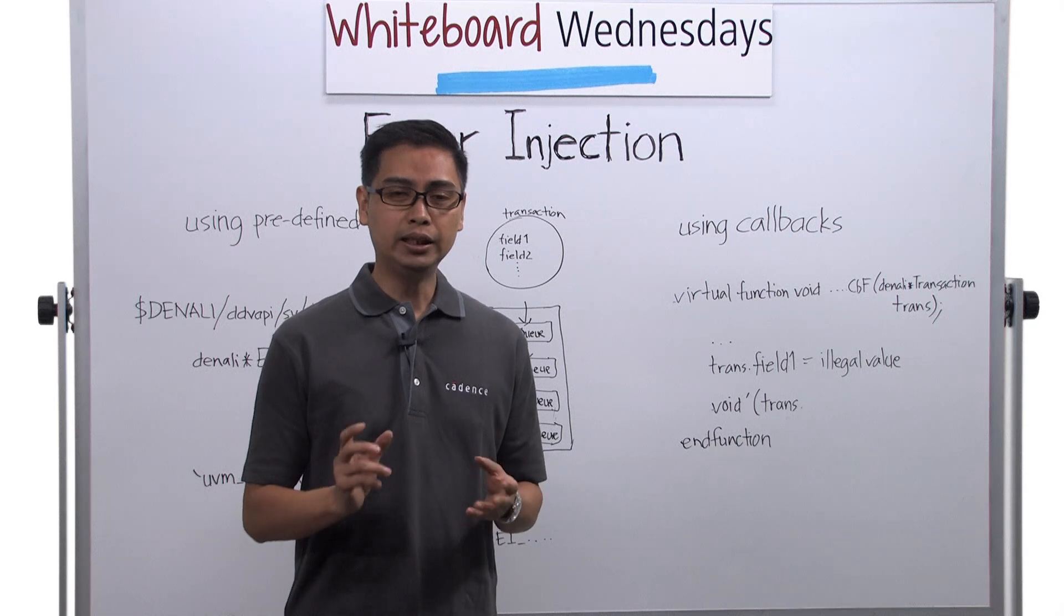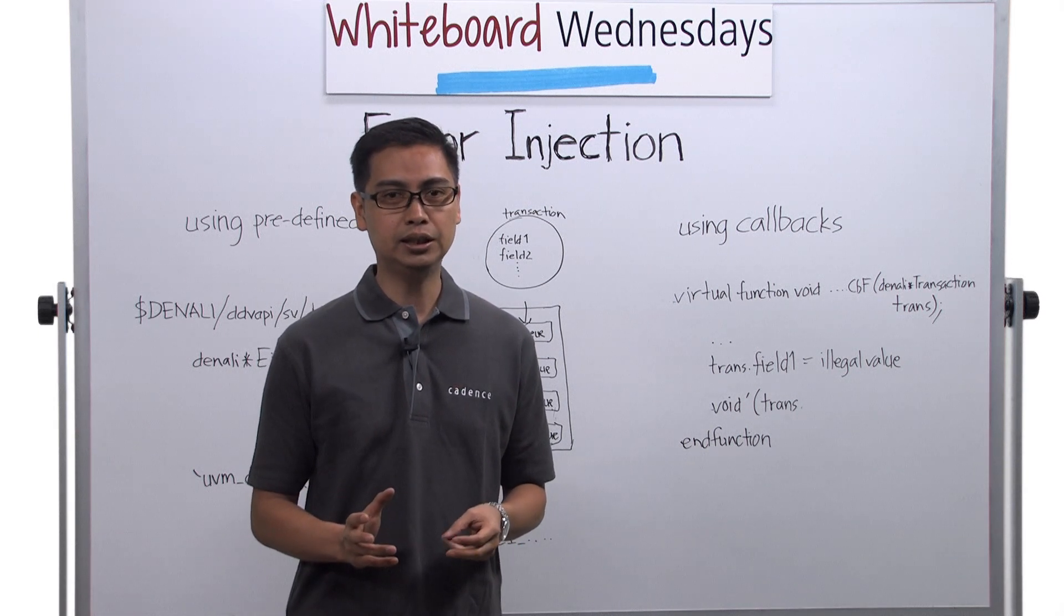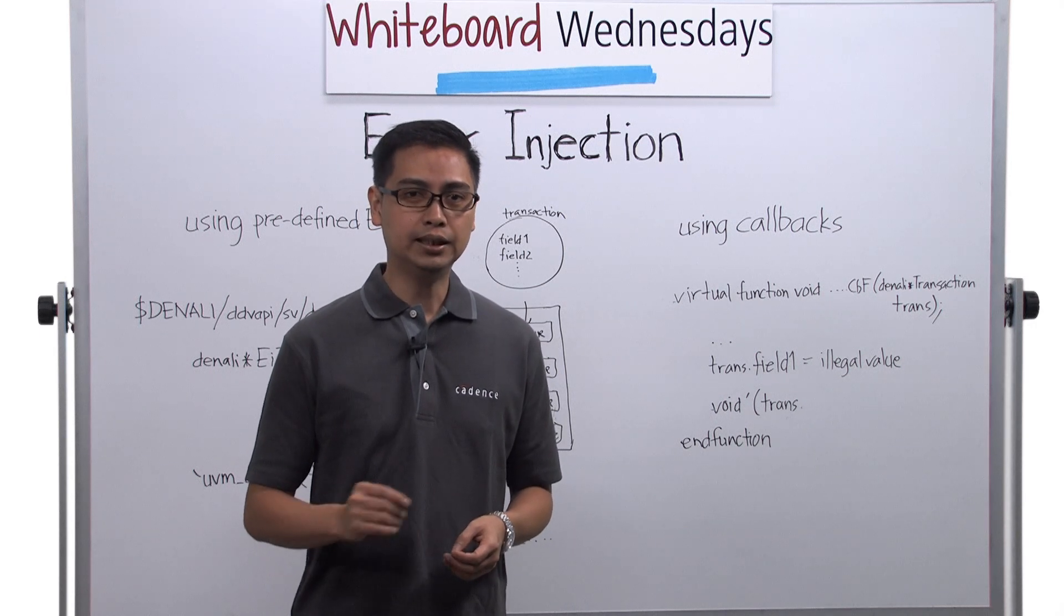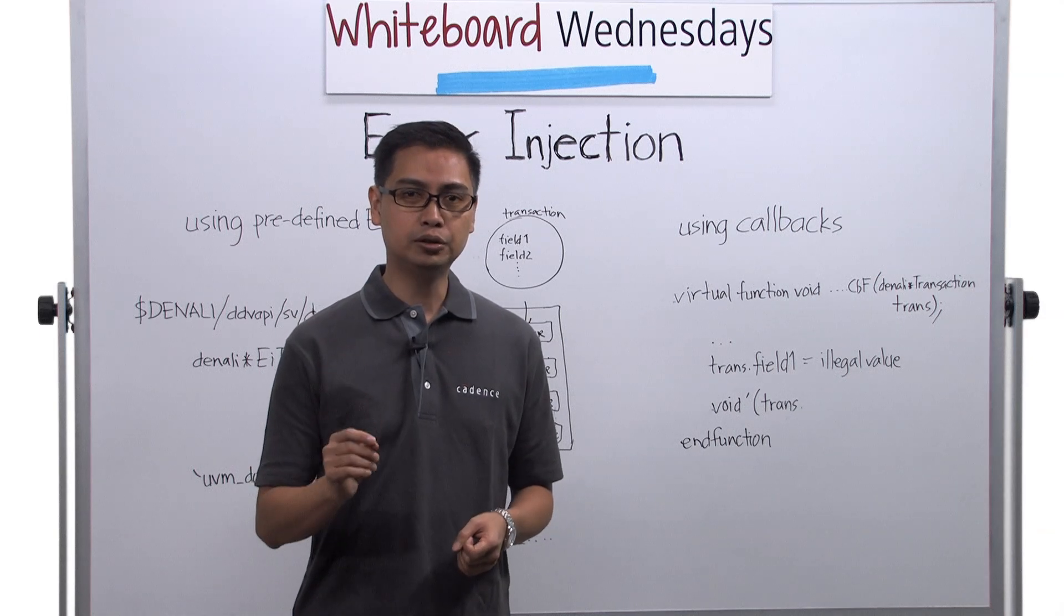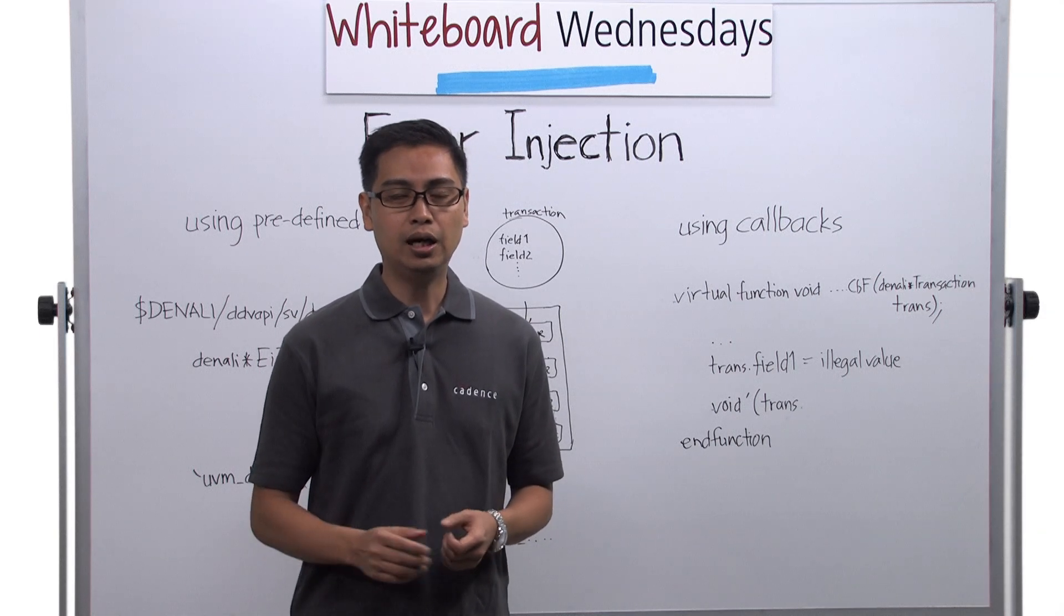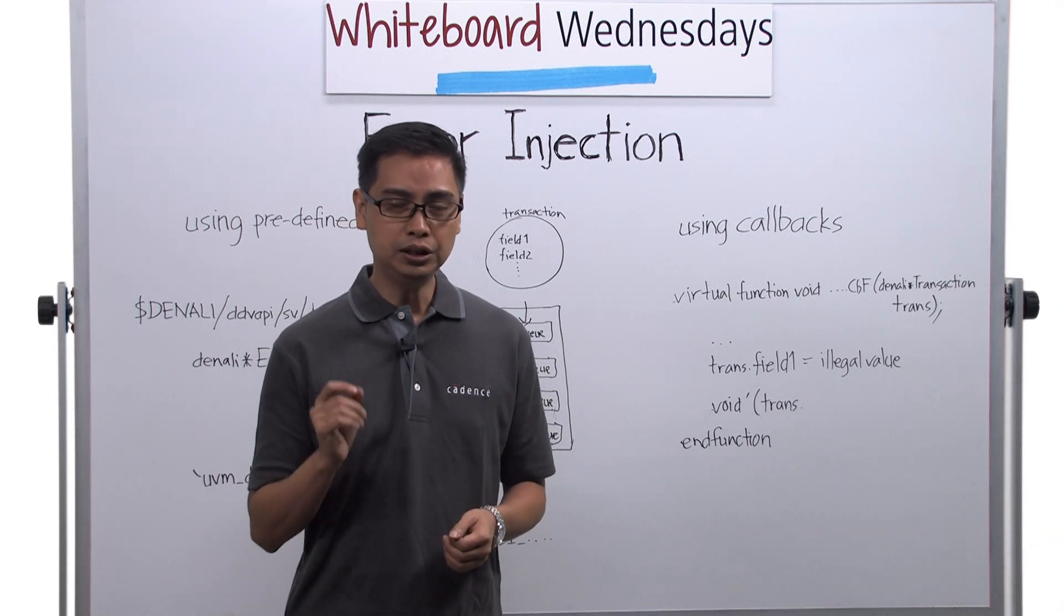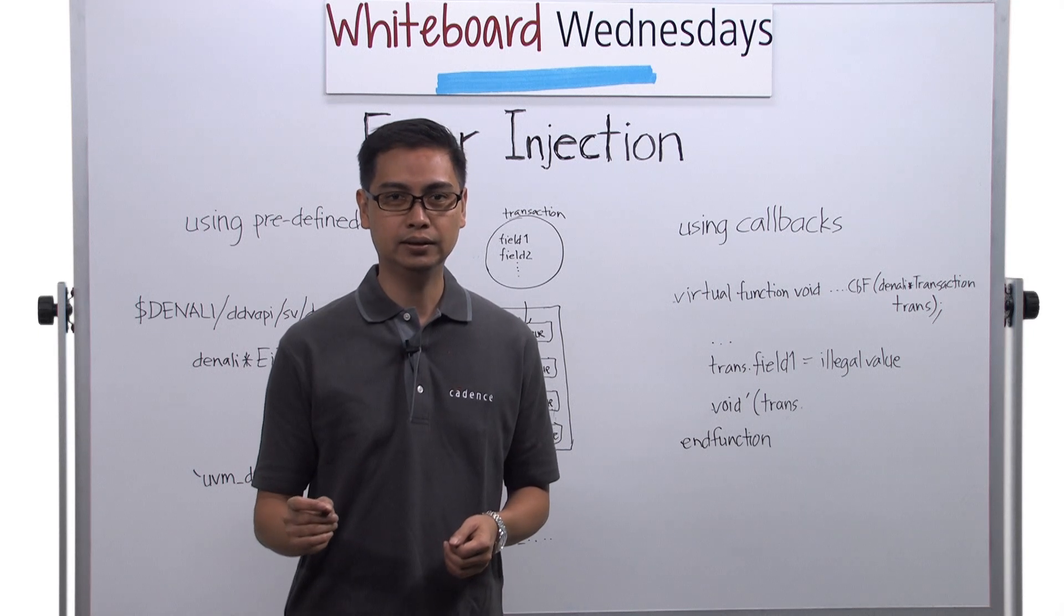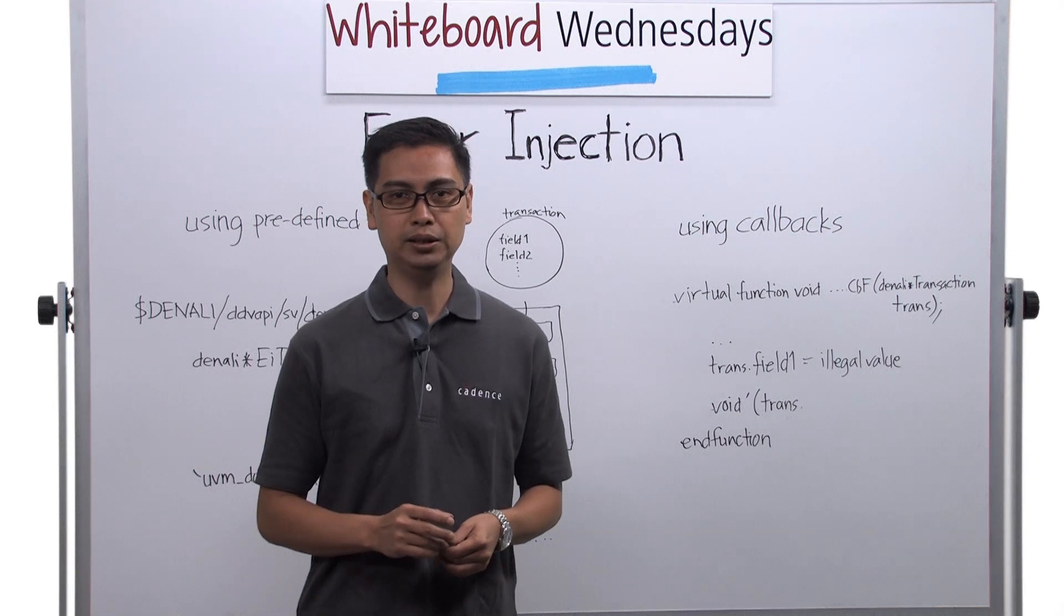Now, by default, the transactions in the Cadence VIPs are generated without errors. This allows you to test if your DUT adheres to the protocol specifications. However, you also want to test if your DUT can react to illegal transactions. That is why the Cadence VIPs also have error injection capabilities.